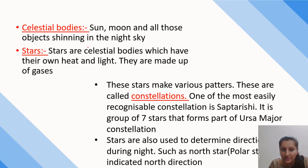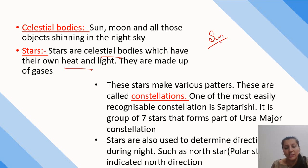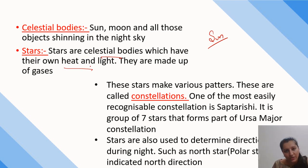Some celestial bodies have their own light and some do not. Stars are celestial bodies that have their own light and heat. We know that the sun is a star because it has its own heat and light. The moon, however, does not have its own light — it reflects the sun's light. Stars produce heat and light because of extremely hot gases that heat up and produce light.